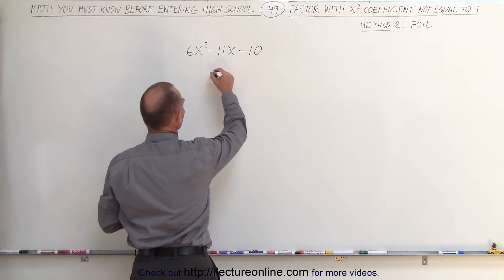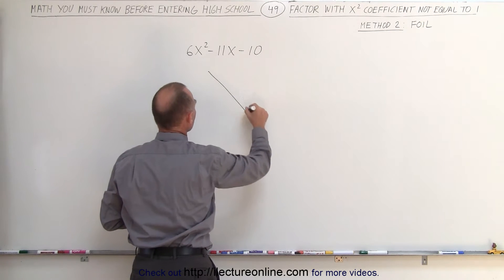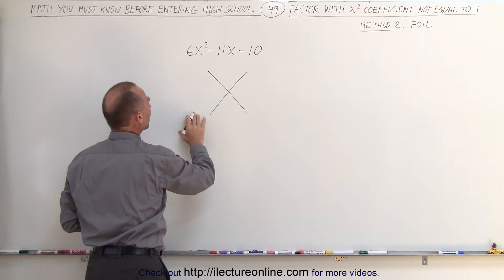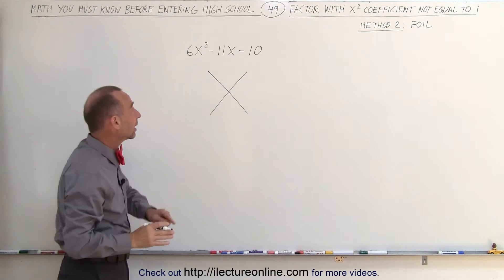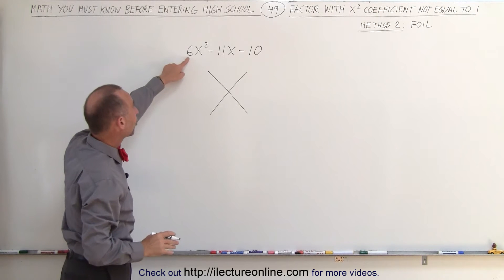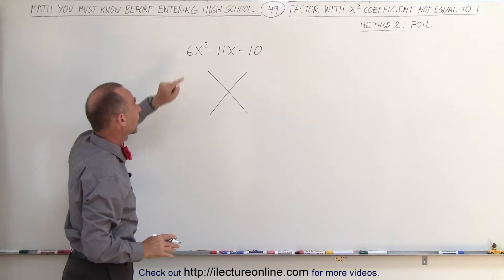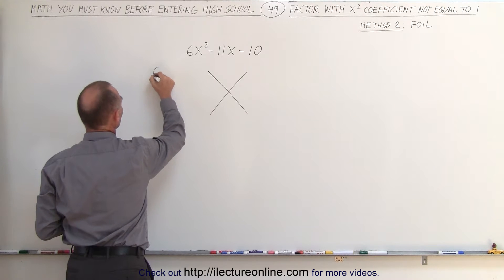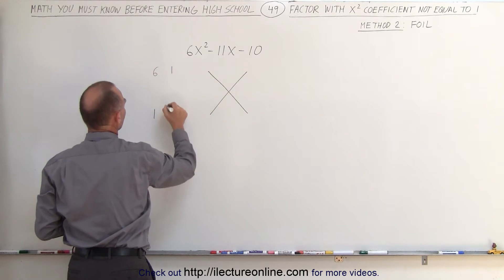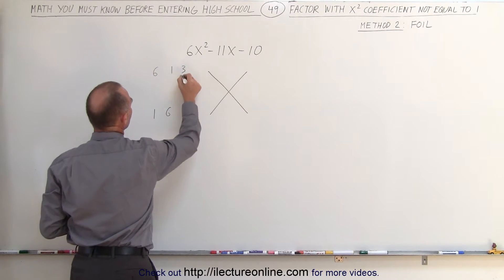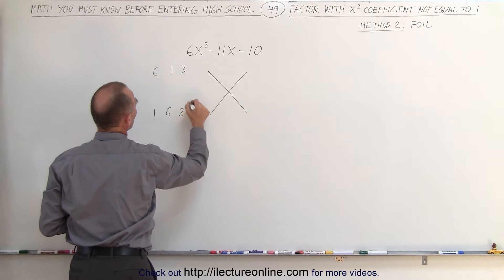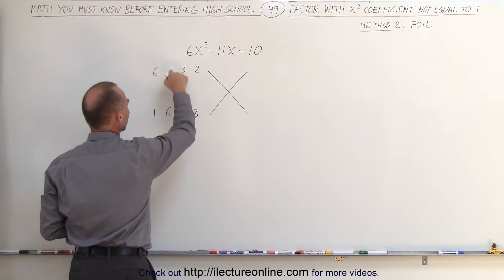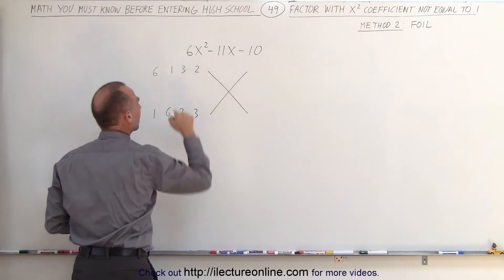What we do is draw a big FOIL, and then on the left side we write all the combinations of numbers so that when we multiply them together we get the coefficient of x squared — we get the number 6. The combinations are 6 and 1, 1 and 6, 3 and 2, and 2 and 3. In each case when we multiply these two numbers together we end up with a 6.